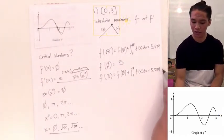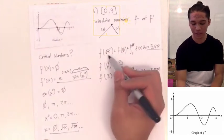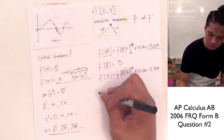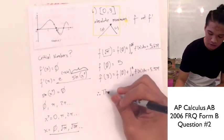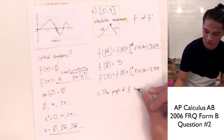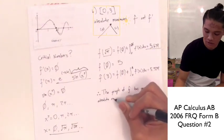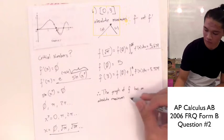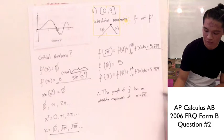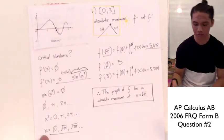As we can see, the greatest value of the three is 5.679, and that is when x equals √π. Therefore, we can conclude that the graph of f has an absolute maximum at x = √π. That is how we answer part b of the question.